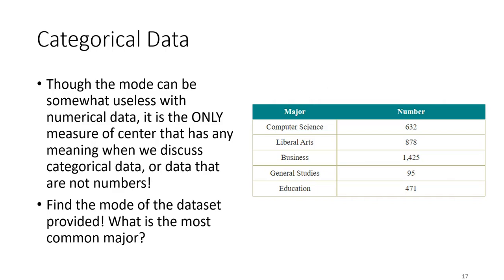The mode is the only measure of center we can use with categorical data — data that is not numerical. Here we have majors at a college and the number of people enrolled in each. The most common major is the one with the highest frequency, which is business. We can't talk about the average major because we can't add up computer science and liberal arts and divide by five, but we can talk about the most frequent — the mode.